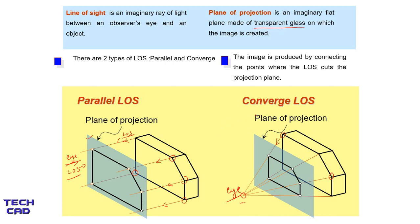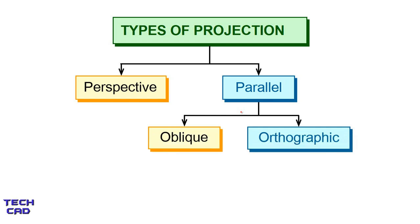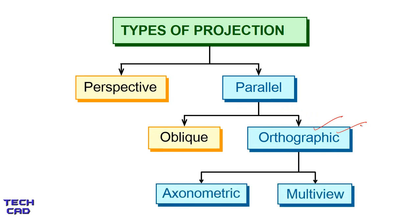So this is the difference between parallel line of sight and converged line of sight. To make a projection we need only two things: the plane of projection on which you project, and the line of sight which is the imaginary ray of light from the observer's eye. Now, there are two types of projections: perspective and parallel. In the parallel type, we again have divisions — that is oblique and orthographic. Orthographic projection is an important topic, and we also have a further division of orthographic into axonometric and multi-view projections.